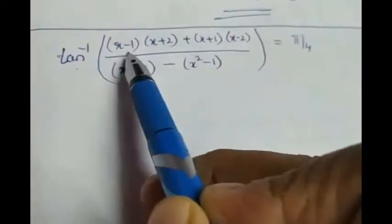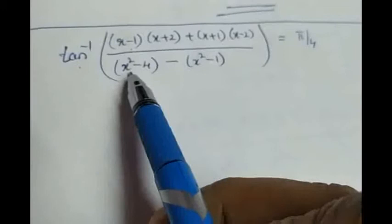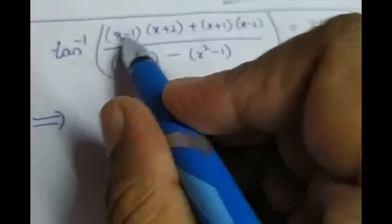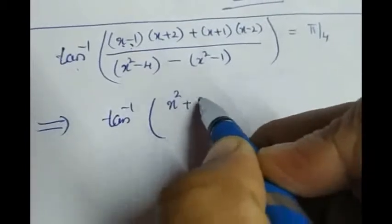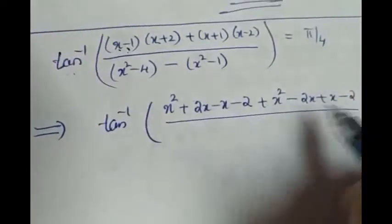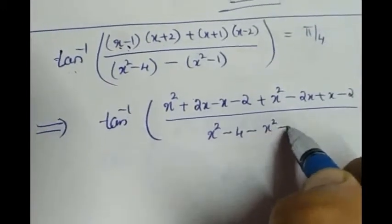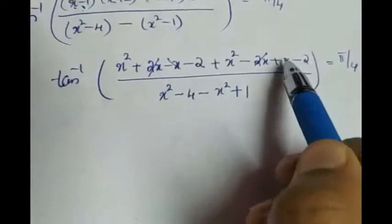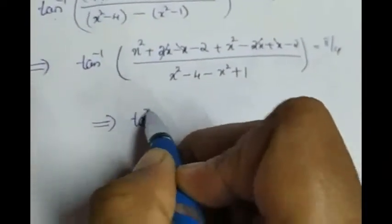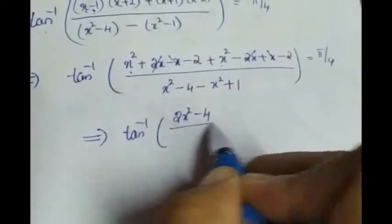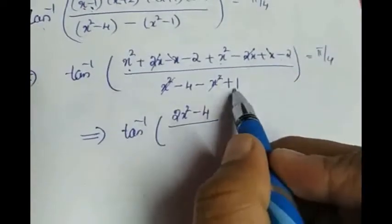We get tan inverse of [(x minus 1)(x plus 2) plus (x plus 1)(x minus 2)] divided by [x squared minus 4 minus (x plus 1)(x minus 1)], which is x squared minus 1, equal to pi by 4. Expanding the brackets: x squared plus 2x minus x minus 2 plus x squared minus 2x plus x minus 2 in the numerator. The 2x terms and x terms cancel, giving 2x squared minus 4 in the numerator. In the denominator, x squared minus 4 minus (x squared minus 1): the x squared terms cancel, giving minus 4 plus 1 equals minus 3.